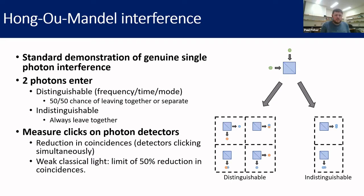The way the Hong-Ou-Mandel effect works is that two photons enter a beam splitter. If those photons are distinguishable from one another — meaning they're slightly different in frequency, arrival time, or spatial mode — they will act independently, each with a 50-50 shot of leaving the beam splitter separately or together. But if those photons are completely indistinguishable, they will always leave the beam splitter together.